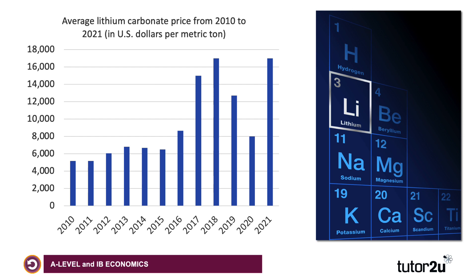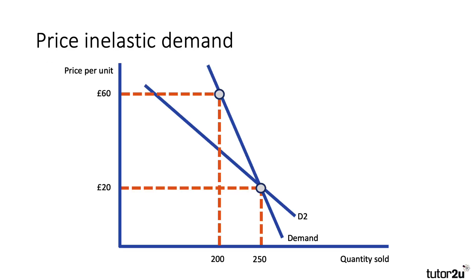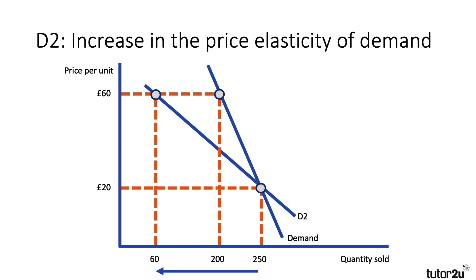Here's the price of the average lithium carbonate per tonne in US dollars. You can see 2020 was obviously a year with the pandemic. The price of lithium is way higher than it was 10 to 12 years ago — surging demand for lithium has driven the price up; it is a scarce primary commodity. Over time, if the price stays high and demand becomes more price elastic — I've drawn D2 as more price elastic than D1 — then the increase in price from 20 to 60 causes a bigger fall in demand, as you can see.